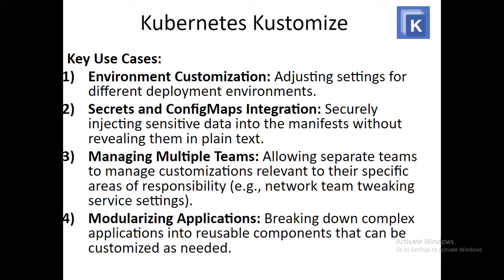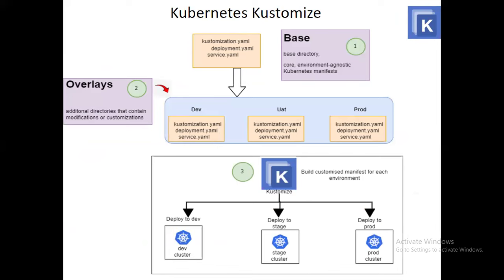Now let's look at the key use cases of Kubernetes Kustomize. The first is environment customization — adjusting settings for different deployment environments. Second is secrets and config maps integration. Third is managing multiple teams. Fourth is modularizing applications — breaking down complex applications into reusable components that can be customized as needed. As you can see in the diagram, the base directory contains core, environment-agnostic Kubernetes manifests including customization.yaml, deployment.yaml, and service.yaml. The overlays directories — dev, staging, and prod — contain modifications, and from these you build and deploy to dev cluster, stage cluster, and prod cluster.